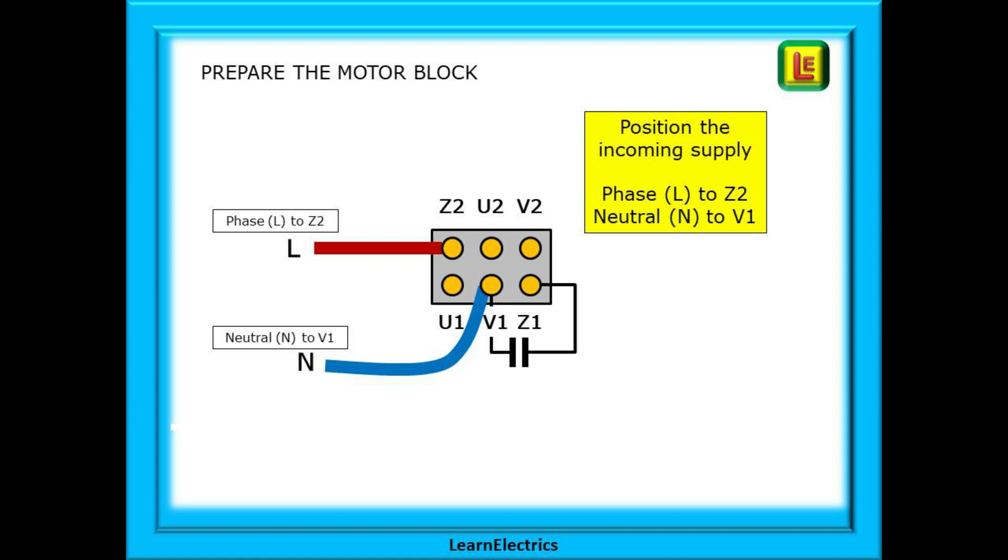Now position the incoming supply on the correct motor block terminals. If you followed our recent video this will require the phase or live to be connected to the Z2 terminal and the neutral to the V1 terminal as shown here.